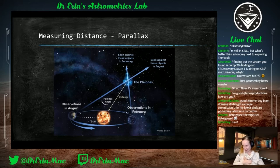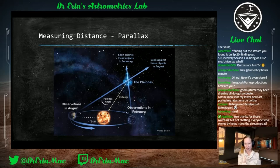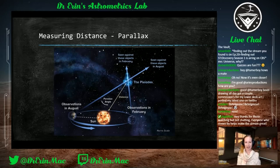As the Earth goes around the Sun, you can observe the same star and notice it appears to shift position. For example, the Pleiades: in August they appear in front of certain background stars, and in February when Earth is on the other side of the Sun, the Pleiades appear in front of different background stars. You can actually do parallax yourself — think about your eyes being a certain distance apart, stick your thumb out, cover one eye, then switch eyes and it looks like it's jumping.